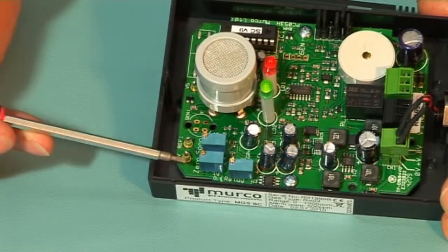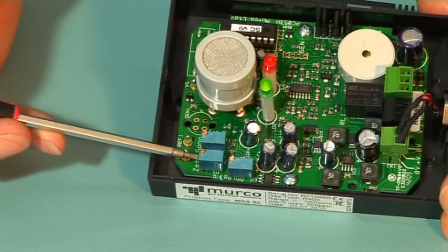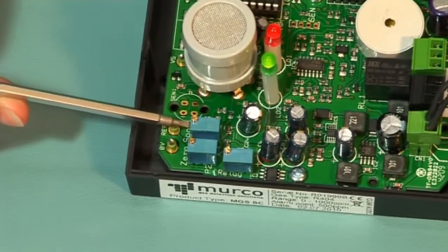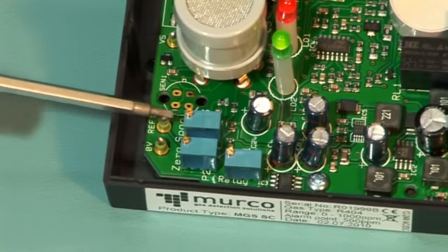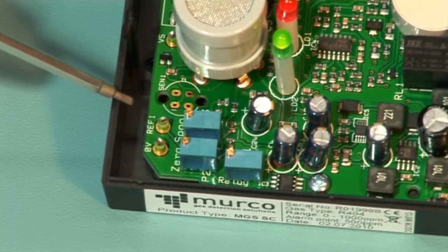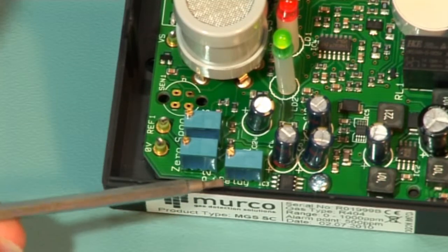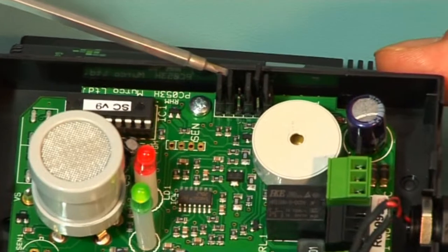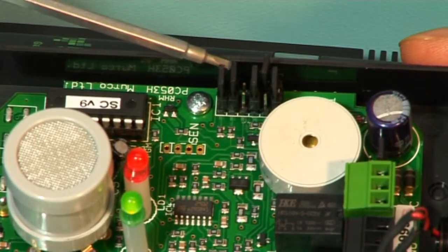The adjustment for the zero voltage is P2 and the range or span adjustment is P3. The voltage alarm set point is monitored at REF1 and the alarm set point adjustment is shown as P1. The delay settings on the unit are at JP5 and JP6 as shown here.